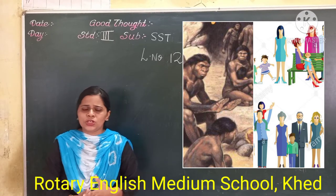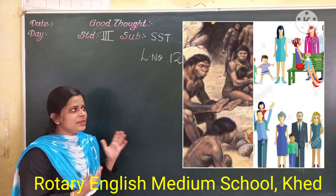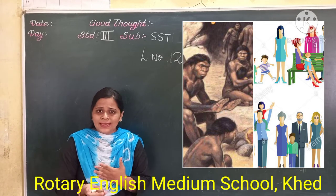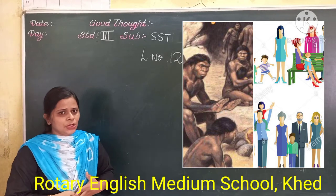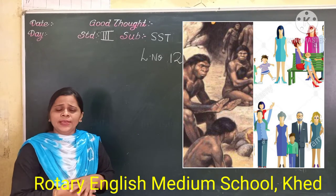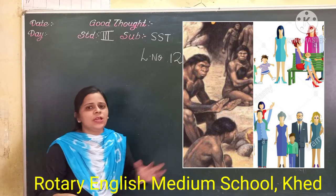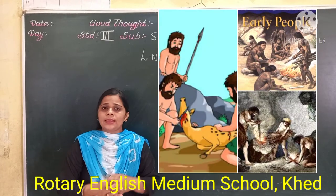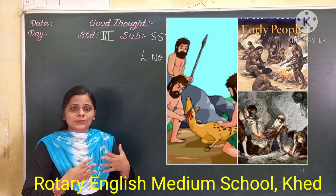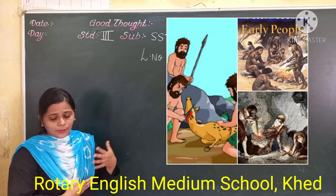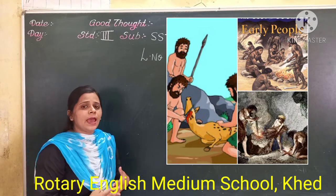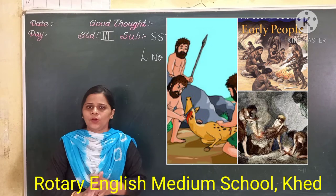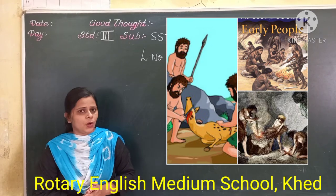Here on the page, you can see the picture of early humans. Do they look the same as modern humans? No. They were totally different from modern humans. Their clothes, their food habits, and their tools were not at all developed.